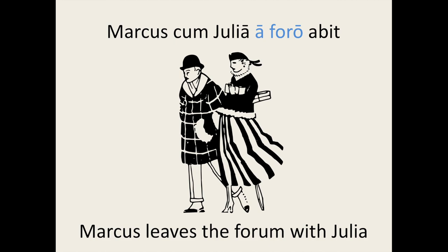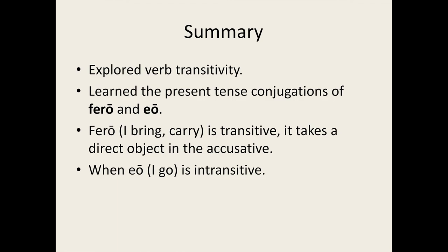Here is a summary of what has been covered this lesson. We have discussed verb transitivity: a transitive verb is one which takes a direct object; an intransitive verb is one which does not. We have learned about the verbs fero and eo, including how to conjugate these verbs in the present tense. We have also discussed the transitivity of these verbs. Thank you for watching this lesson — I hope you enjoyed it.